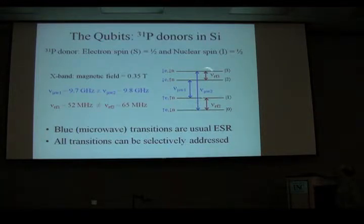The energy level structure looks like this. The blue transitions, so this isn't the scale. The blue transitions are microwave transitions. One at 9.7 gigahertz, one at 9.8. You have two different transitions because we have a spin-1/2 electron and a spin-1/2 nucleus. And the hyperfine interaction, in this case, is 100 megahertz. So we have the two different microwave transitions and we have two different RF transitions, 52 and 65 megahertz. And these are all well separated. So we can pick any one of these that we want or any pair and excite them.